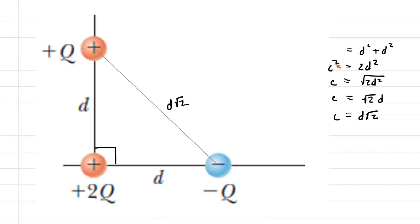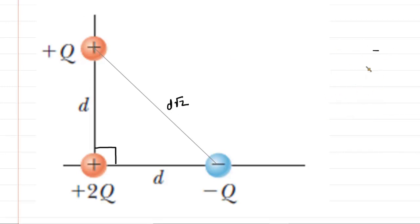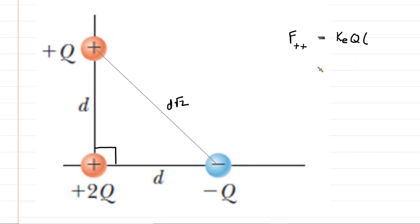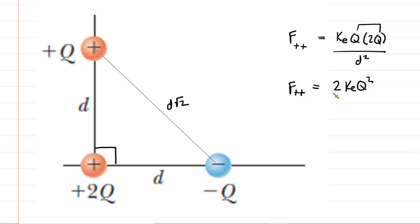We'll apply Coulomb's Law first between the two positively charged particles. We call this F(positive, positive). Coulomb's Law tells us it equals k_e times Q times 2Q, divided by d squared. Simplifying the numerator — putting the 2 in front — gives us 2k_e Q² / d². This is the magnitude of the force acting between the positive charges.